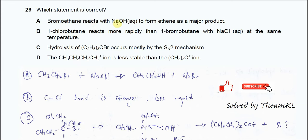Statement A: Bromoethane reacts with sodium hydroxide to form ethene as a major product. Because the NaOH is in water, it will not undergo elimination. It will undergo substitution.